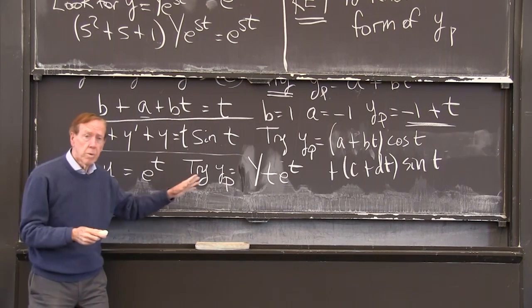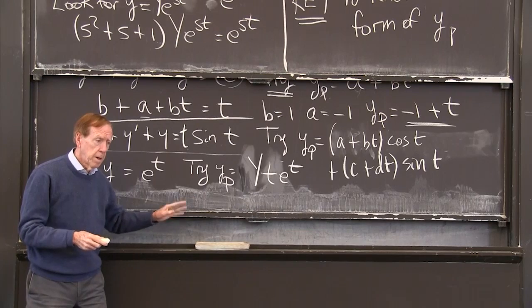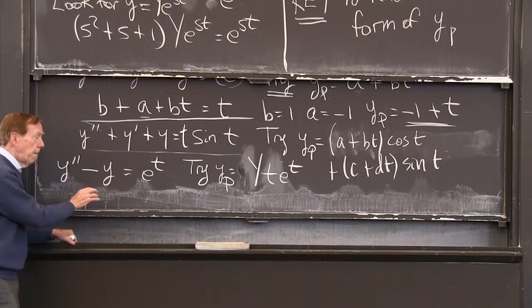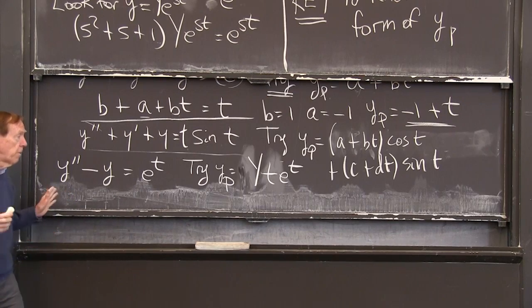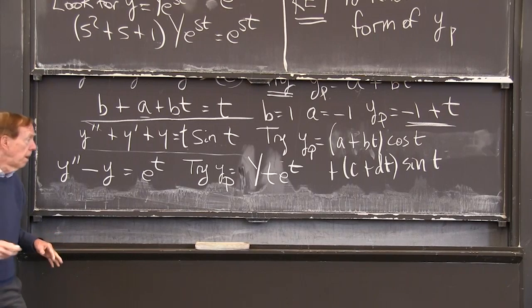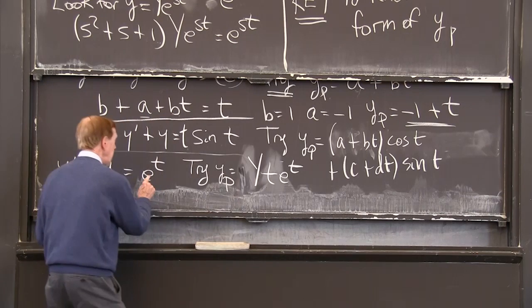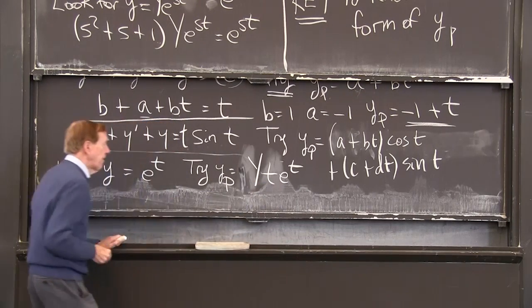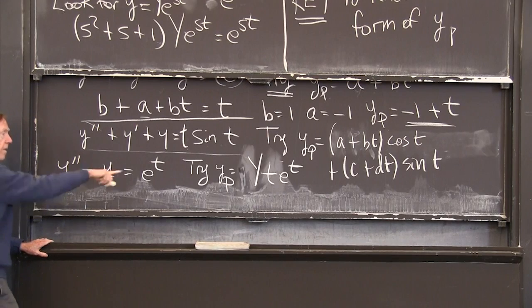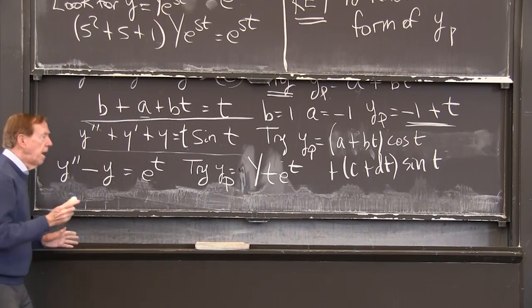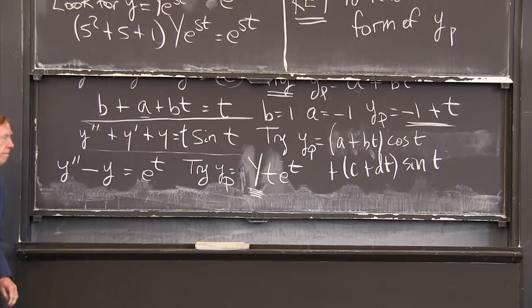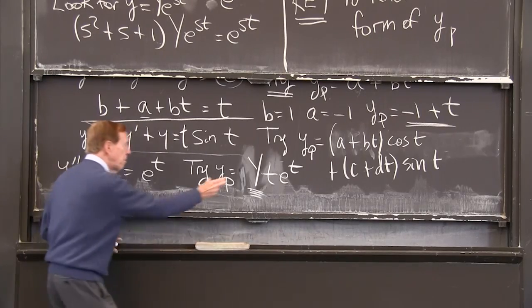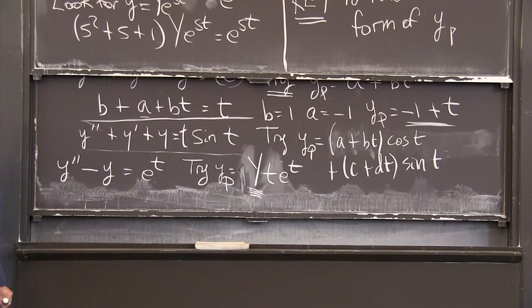When there's resonance, take the form you would normally assume and multiply by that extra factor t. Then when I substitute that into the differential equation, I'll find y quite safely. So that's the resonant case, the special situation when e to the t solved this. So we need something new, and the way we get the right new thing is to have a t in there. So when I plug that in, I take the second derivative of that, subtract off that itself, match e to the t, and that will tell me the number y. Perhaps it's 1 half or 1. Maybe I leave that as an exercise. Put that into the equation and determine the number capital Y.